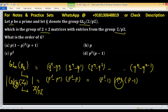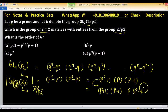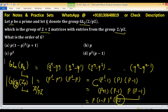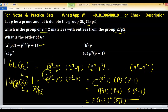Taking p as a common factor and factorizing: (p² − 1)(p² − p) = (p+1)(p−1) · p(p−1) = p(p+1)(p−1)². This matches option A, so option A is the right answer.